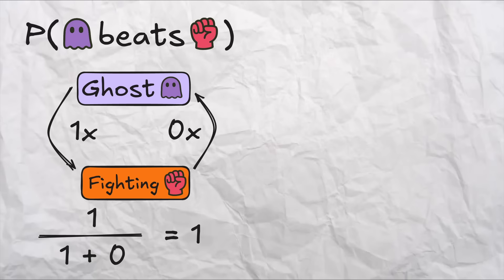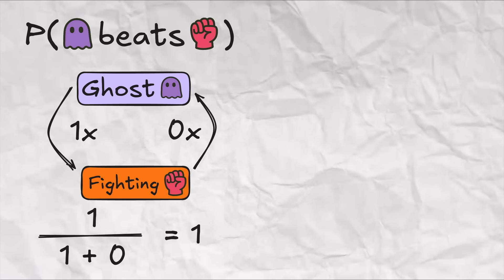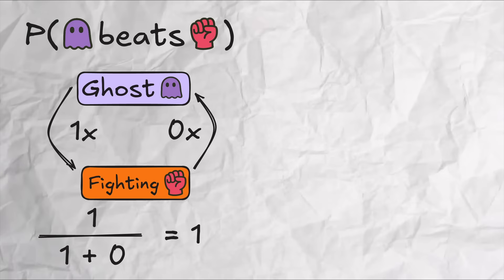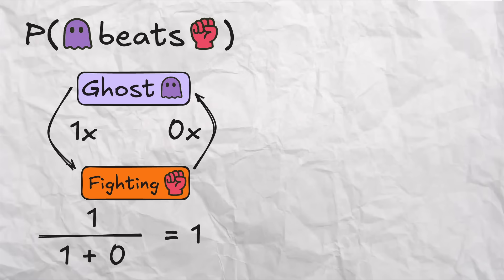This also works really well with immunities. For asymmetric immunity relationships, for example fighting and ghost, we see that probability ghost beats fighting is one, and probability fighting beats ghost is zero.